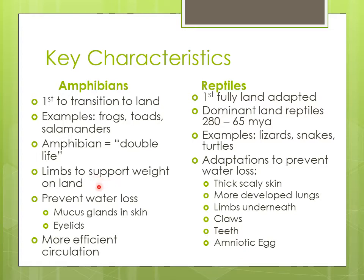Amphibians have limbs to support their weight on land — limbs being like legs. They also have some adaptations to prevent water loss, because when you move to land you don't have constant water surrounding you, so you have to be able to keep water in. They have mucus glands in their skin and also eyelids. Moving to land also requires more efficient circulation, because it's harder to pump blood on land than in water where you're buoyant.